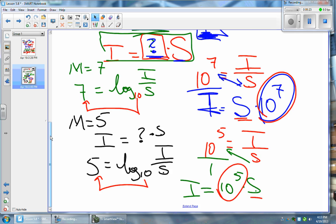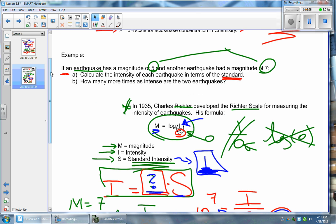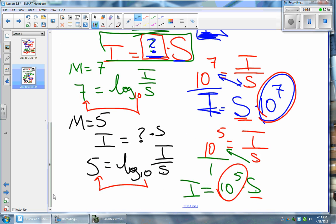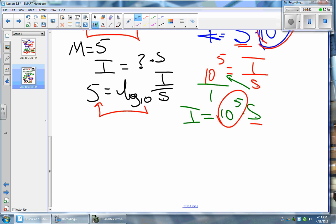Now look back at the question. The question says right here, how many more times as intense are the two earthquakes? Well, this becomes really easy to figure out because you have one that's 10 to the 7. You have one that's 10 to the 5. Well, okay.